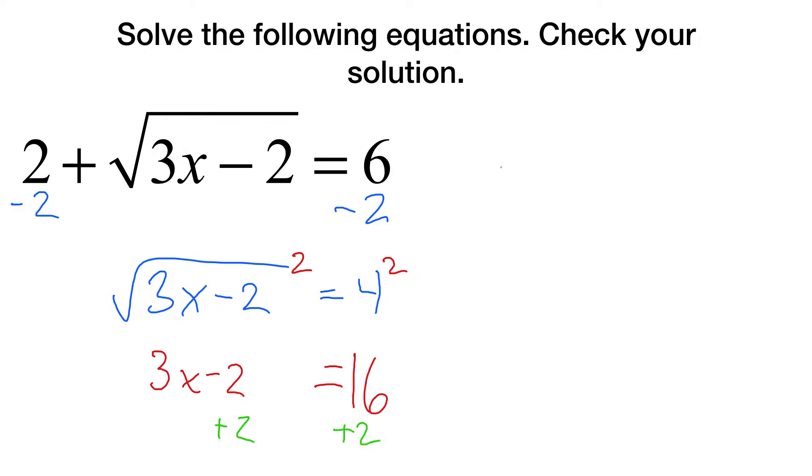At which point, we solve like normal. Plus 2, plus 2, that means 3x equals 18. Then divide by 3, x equals 6. Now we know x is 6, but what we have to do is we have to go back and check our solution. That's because most of the time these solutions are going to work, but every so often there's going to be a few that seem good but at the end just don't quite work how they should.